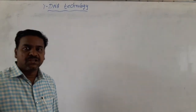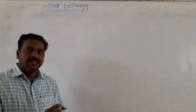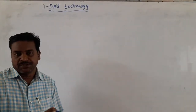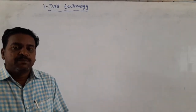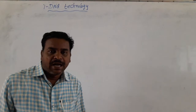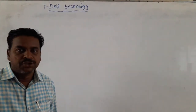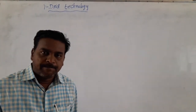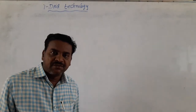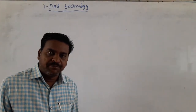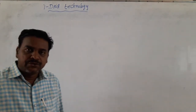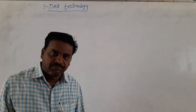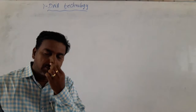Good morning students. Now coming to the remaining steps in recombinant DNA technology. Already some steps were explained in the previous class: one is isolation of DNA, two cutting of DNA, three isolation of desired DNA, four insertion of desired DNA into a recombinant vector. Now coming to the remaining steps.